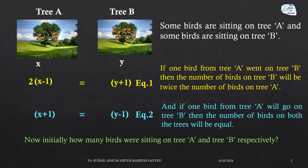To solve this we will use simple mathematics. We have tree A and tree B. We will assume that x number of birds are sitting on tree A and y number of birds are sitting on tree B.